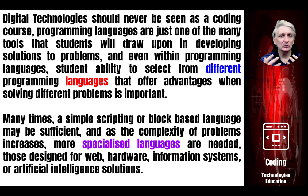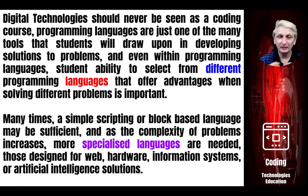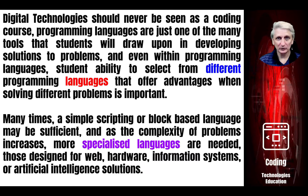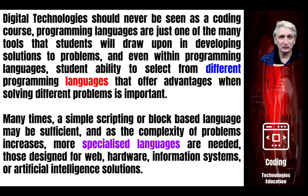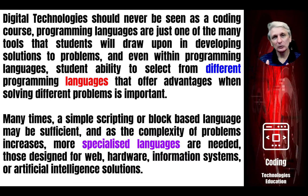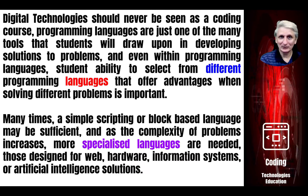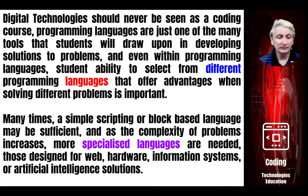We utilize various tools to help us with that, such as block-based programming, which makes it a little bit easier. There are a range of different programming languages, some more specialized than others. For example, HTML is a programming language used for creating websites and web pages as we use on the Internet — a specialized language for that purpose. There are other programming languages used for robotic kits, and we're going to look at some of those over this session.